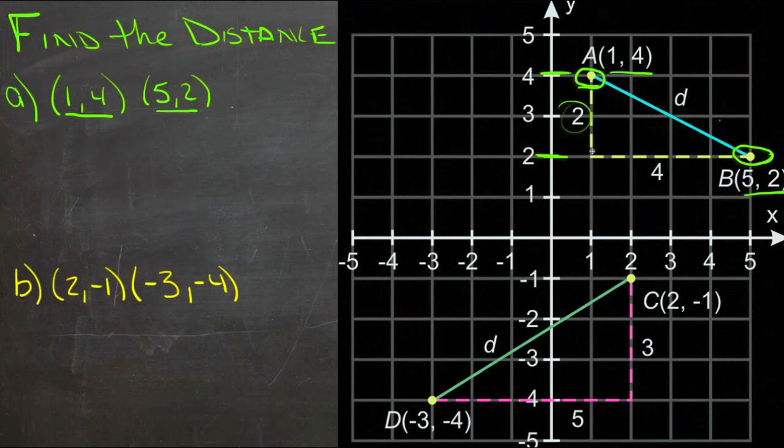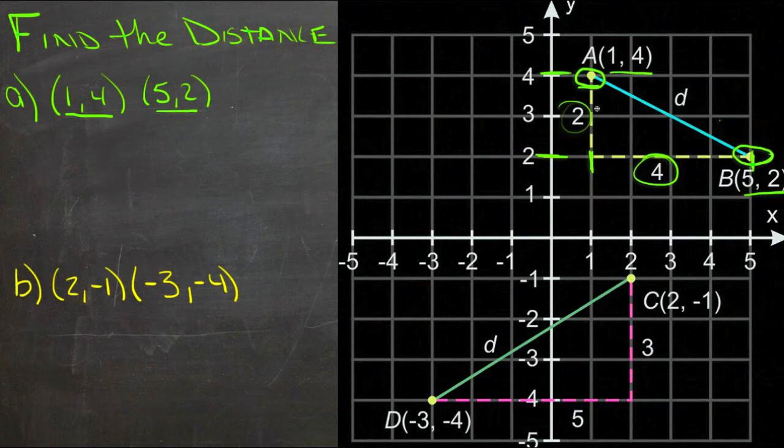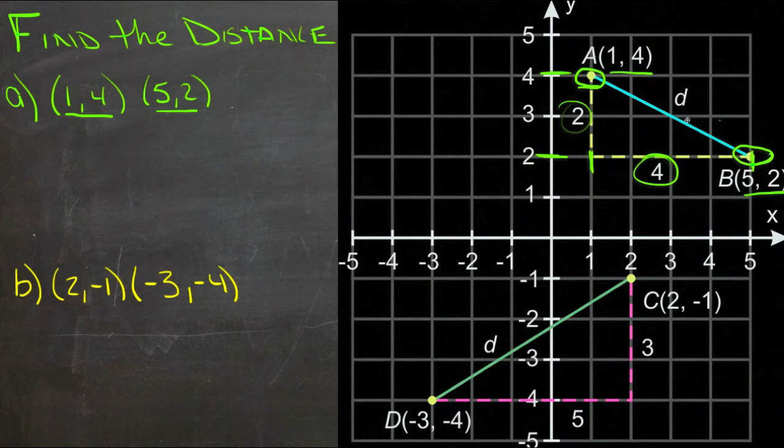And this one has an x-coordinate of 1. This one has an x-coordinate of 5. So the difference between those coordinates is 4. Those two differences give us the two sides of a right-angled triangle, 2 and 4. And then the missing length that we're looking for is the third side of that triangle.